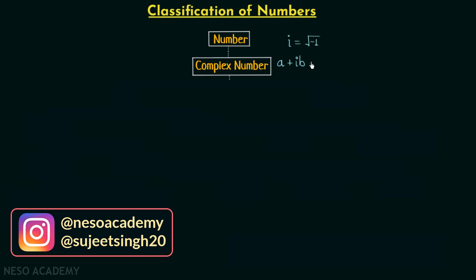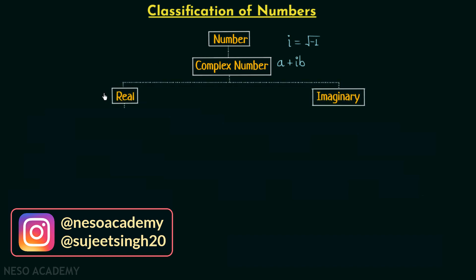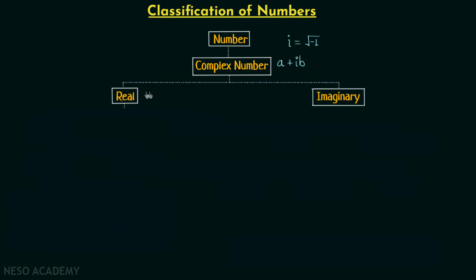Now depending on the value of a and b, a complex number can be classified into two types. The first one is a real number. The complex number will be real when b is equal to zero. When b equals zero, the complex number equals a, and since a is a real number, the complex number is real.